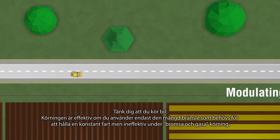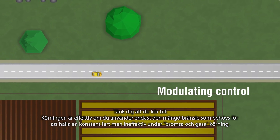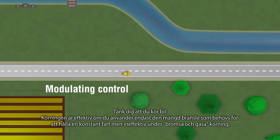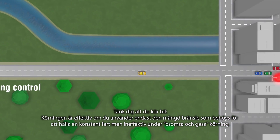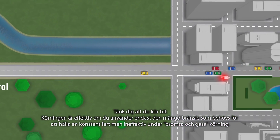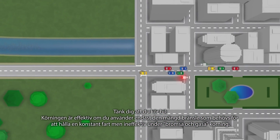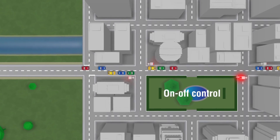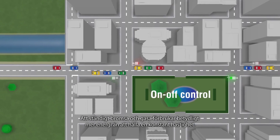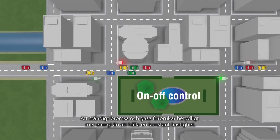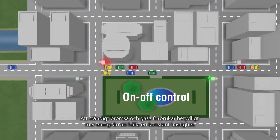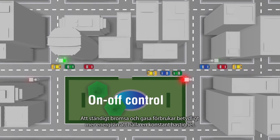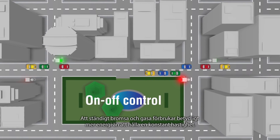Imagine you are driving a car. It runs more efficiently if you only use the necessary amount of fuel to keep a constant speed, but inefficiently when in stop-and-go traffic. Continuous braking and accelerating consumes significantly more energy than maintaining a constant speed.